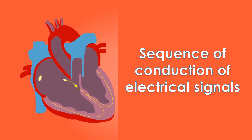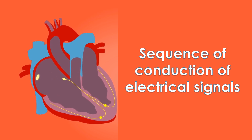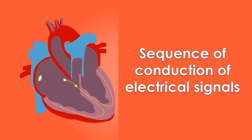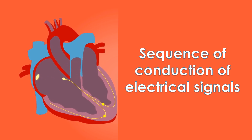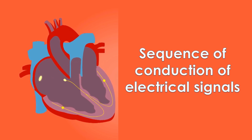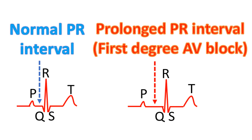The delay allows the complete emptying of the upper chambers before the lower chambers start contracting. This gives a booster filling for the lower chambers, apart from the passive filling which occurs when the lower chambers relax after a contraction. Isolated first degree AV block or prolongation of the PR interval is not significant if it is only moderate prolongation. Significance is mainly for any associated abnormality of the heart which may progress.